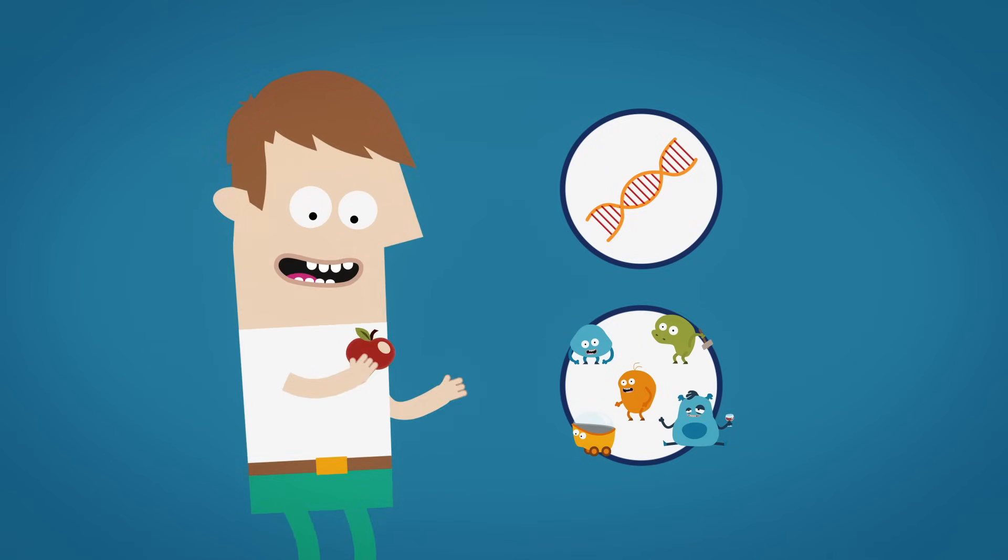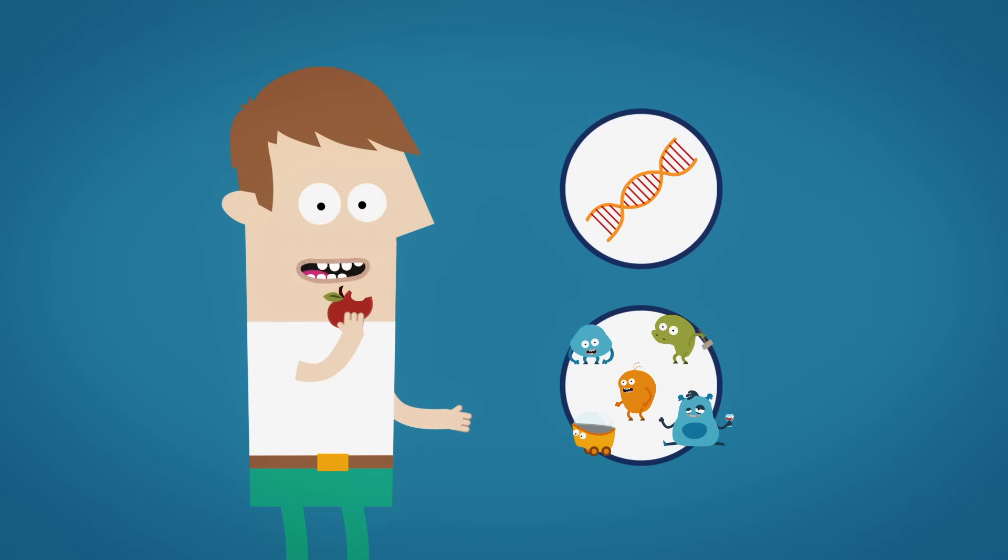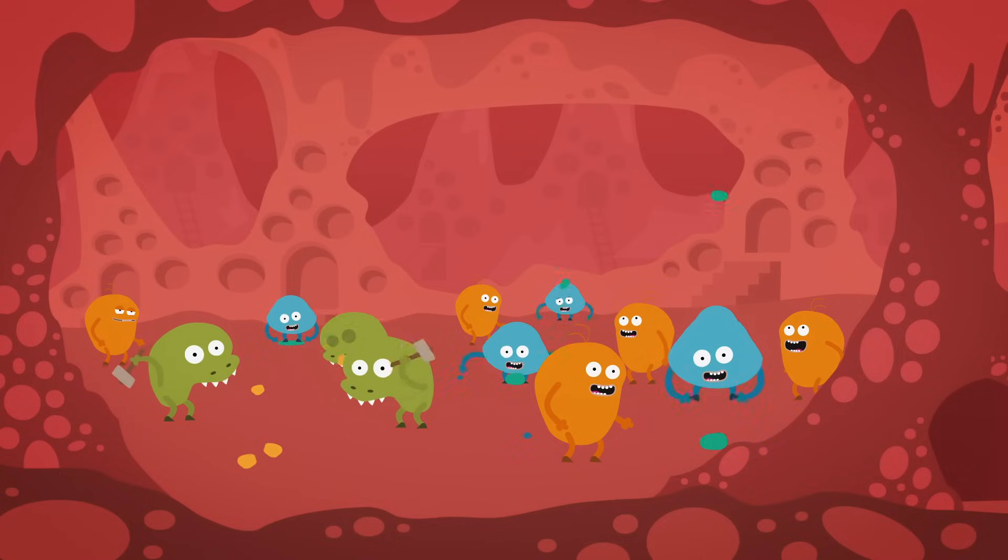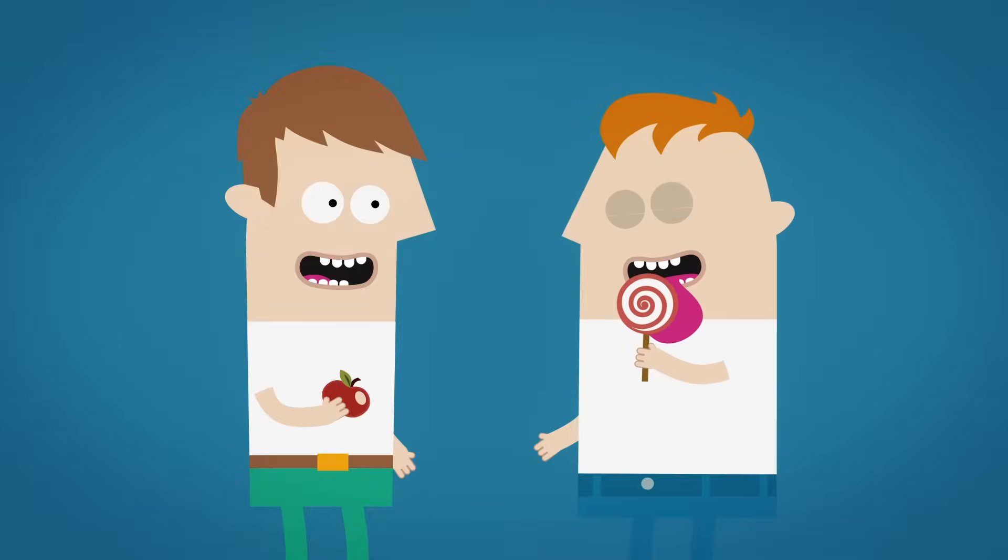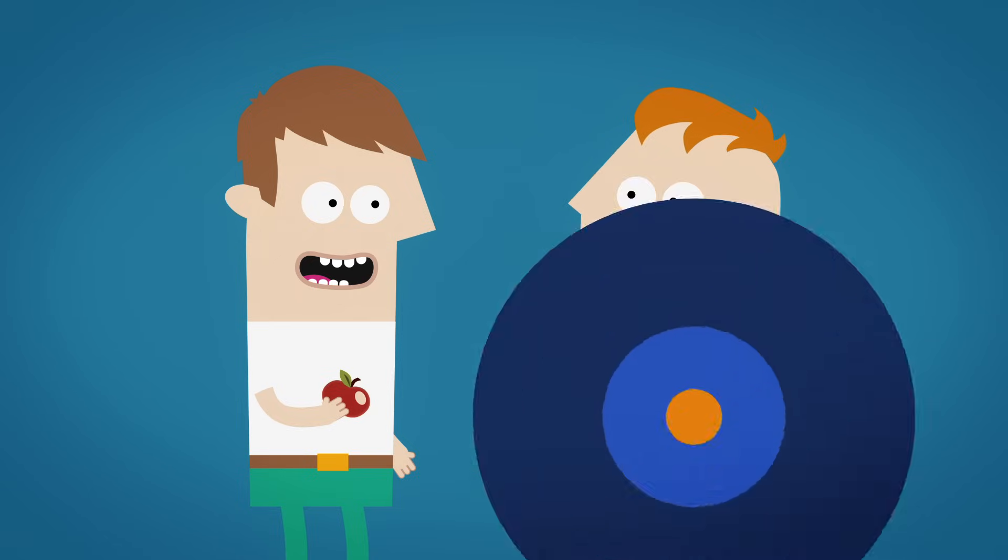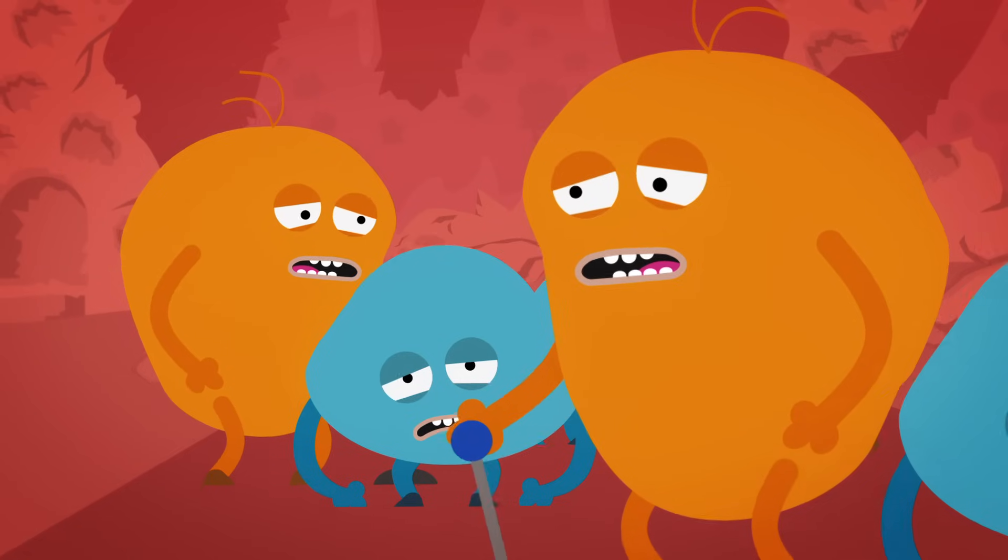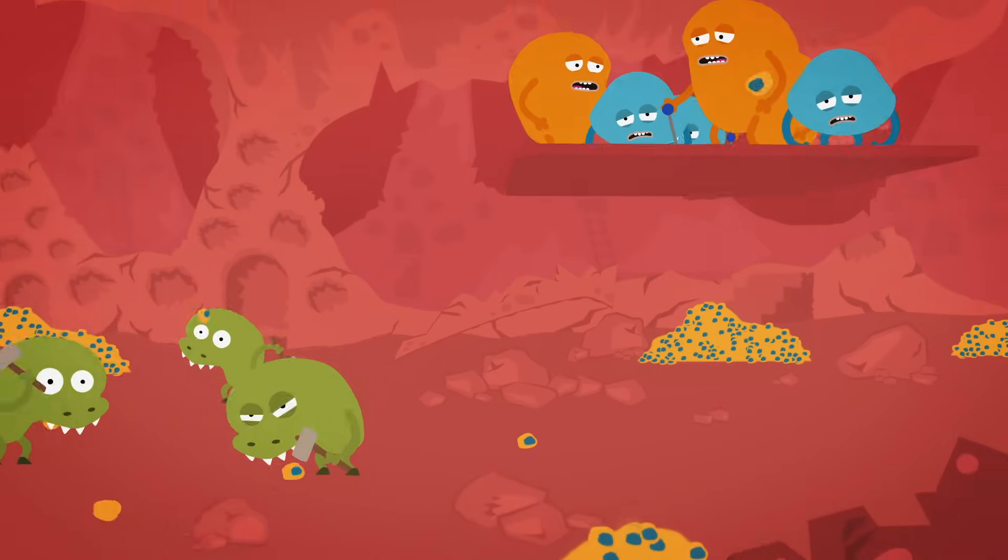The food we eat also influences which microbes live in our gut. For example, food made of complex molecules like an apple requires a lot of different microbial workers to break it down. But if a food is made of simple molecules like a lollipop, some of these workers are put out of a job. Those workers leave the city never to return.